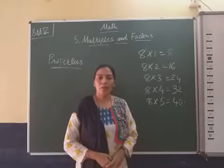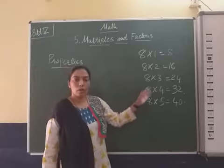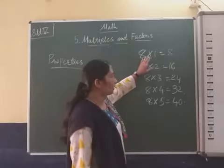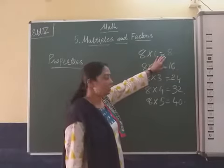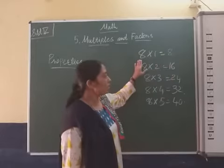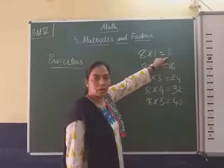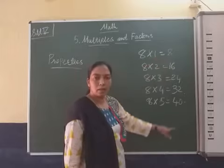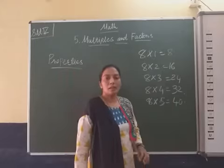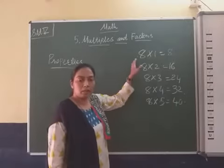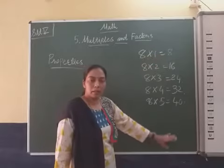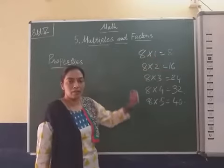Every multiple of a number is equal to or greater than the number itself. For example, if we find the multiples of number 8, every multiple is equal to or greater than the number itself.